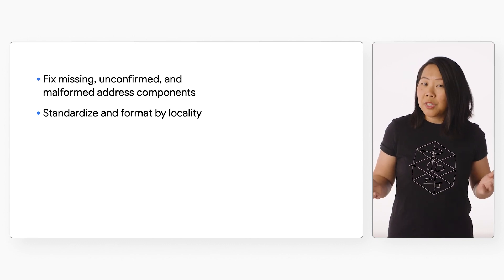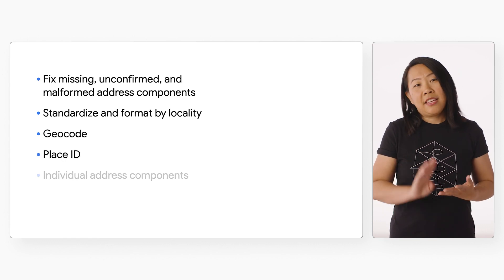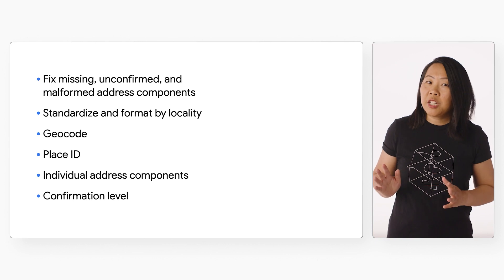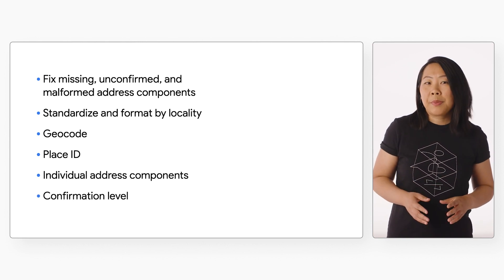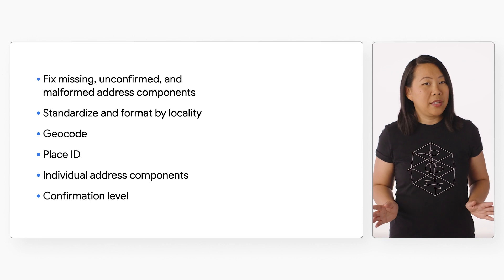The API will also return the geocode, place ID, and the individual components of the address, and provide a confirmation level to let you know whether Google Maps Platform has high or low confidence in the quality of the response. Along with other Google Maps Platform features like Geocoding API and Place Autocomplete, the Address Validation API makes Google Maps Platform a comprehensive address and delivery point validation service.